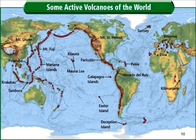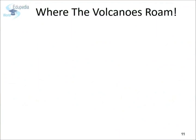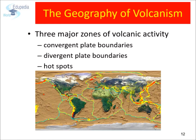It would be easier to understand Volcanism if we examine the locations where volcanoes are found on the earth's surface. If you observe the map, the red dots represent volcanoes. Volcanoes can mainly be found at three locations: convergent plate boundaries, divergent boundaries, and far away from plate boundaries on hotspots.